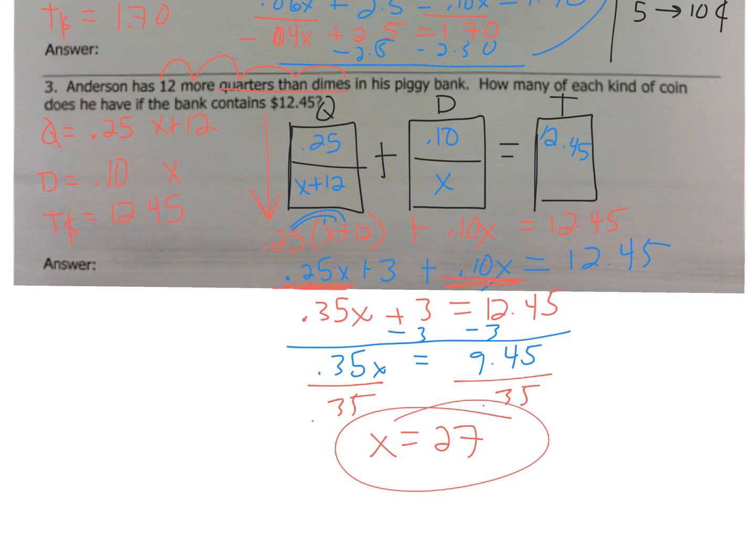Now, again, we're not done. Let's go back. So, if x is 27, 27 plus 12 is 39. So, again, answering the question, how many of each kind of coin does he have? Well, he has 39 quarters, and he has 27 dimes.